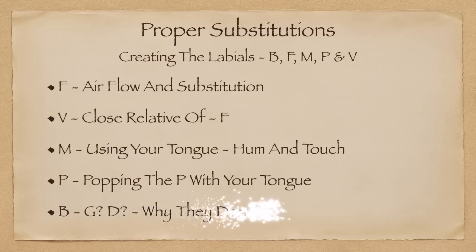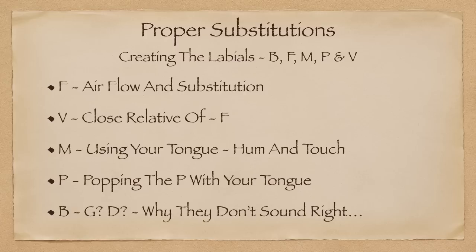For years, ventriloquism courses have offered the substitutions G and D for the letter B. Why don't they sound right? Well, it's because they're not right. You have to learn to modify the sound substitution to create a believable B. We discuss that briefly in the article below and go into it in much more depth in my online course.